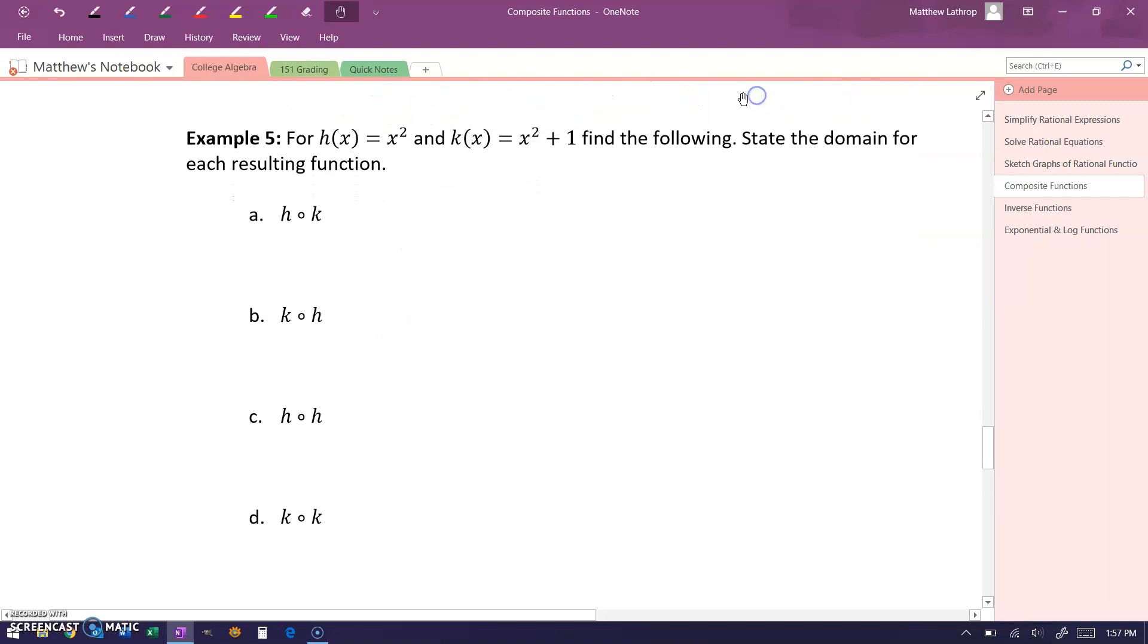In example five, we have more or less the same question, but with two new functions, x squared and x squared plus one. Evaluating h of k would mean we want to take our function h and evaluate it at x squared plus one.